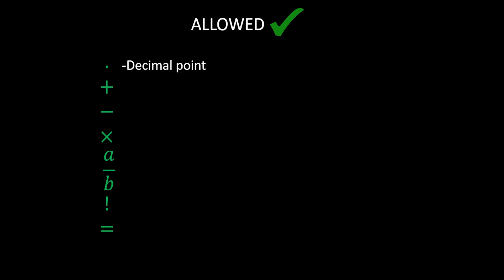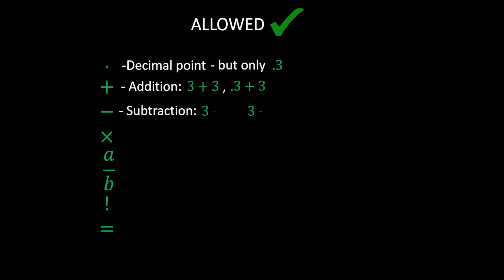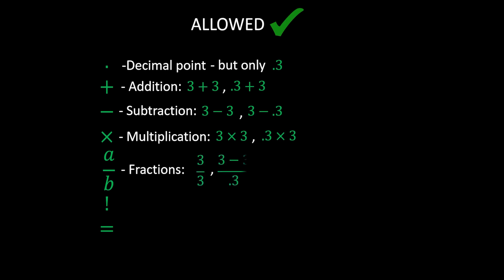Before you start, I would like to define some basic rules. You are only allowed to use the following operators or symbols. You can use the decimal point, but just to be clear, you can only use point 3 — no other decimal value is available for this challenge. You can use addition, subtraction, and multiplication in any form that you like. You can use fractions as well, so 3 over 3, or a quantity like 3 minus 3 over 0.3, or anything else like that.